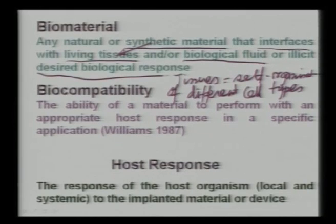The desired biological response can differ for different biomaterials. For total hip replacement, the material must bear load, so mechanical properties are important. For artificial heart valves, the material must facilitate blood flow, but mechanical property is less critical. For bone replacement, good cell adhesion and tissue formation are needed, whereas for heart valves, the material should prevent blood cell adhesion to avoid thrombus formation.